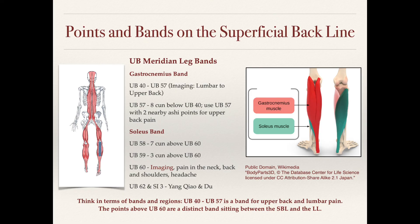UB60 is commonly used in TCM acupuncture — it images the neck and is indicated for pain in the neck, back, and shoulders, and is used for headaches. Since transitioning to Master Tung-style acupuncture and more distal needling, I now tend to needle the Master Tung points in the soleus band around UB58 and UB59 rather than the traditional points, as they are very effective and produce essentially the same result as UB58 and UB59. We'll look at the details in a following slide.